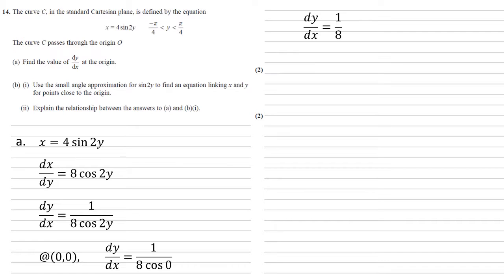For part b, we need to use the small angle approximation for sine 2y to find an equation linking x and y for points close to the origin. So our small angle approximation is sine 2y is approximately equal to 2y for small y.